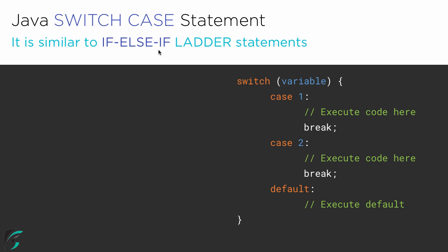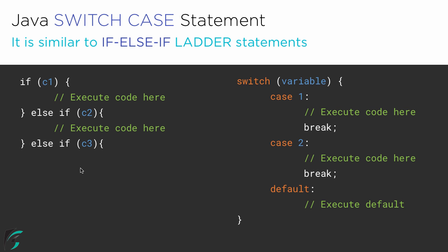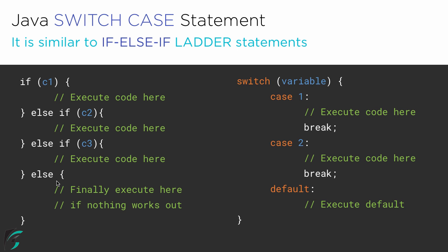The switch case statement is similar to the if-else if ladder. Here, if condition 1 is true, then execute the code. Else if condition 2 is true, then execute this code. Else if condition 3, and finally we have the else part at the end. If you compare the switch case statement with this, you find condition 1 here maps to case 1 there, condition 2 maps to case 2, and at the end the default clause maps to the else part — which gets executed when none of the conditions match.